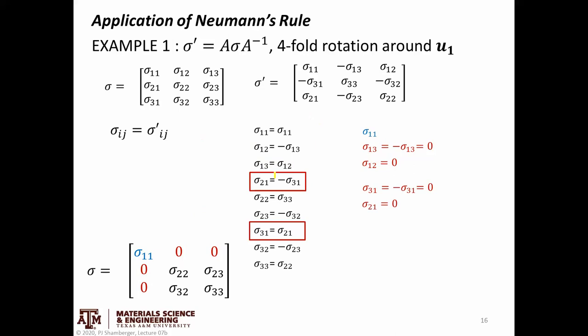Similarly, σ₂₁ equals negative σ₃₁, and σ₃₁ equals positive σ₂₁. Substituting back in gives σ₃₁ equals negative σ₃₁. The only way that's true is if σ₃₁ equals zero. And if σ₃₁ equals zero, then from either relationship σ₂₁ also has to equal zero. So that gives me a zero element here and a zero element here as well.